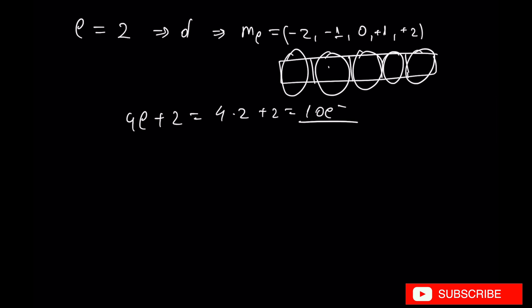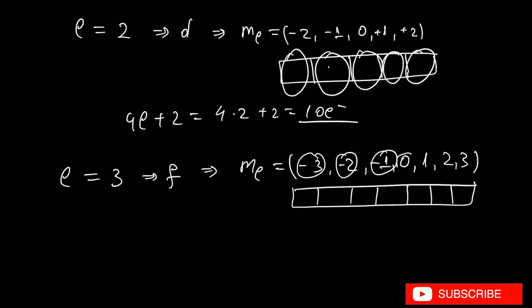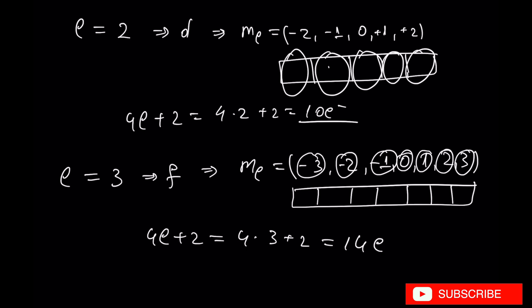Let's move now to L equal to 3, which represents f orbitals. f orbitals have an ML range, and as many numbers as there are, that's how many orbitals we have to draw. So we are going to have 7 orbitals, and the total number of electrons that f can contain is 14 electrons, since one orbital can contain a maximum of 2 electrons with opposite spins.